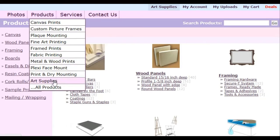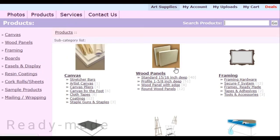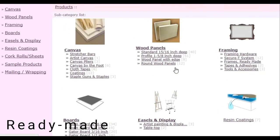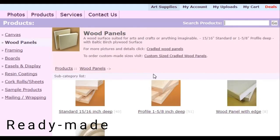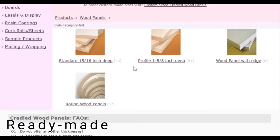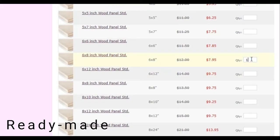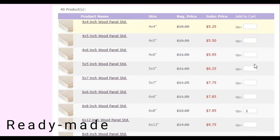Now let's look at how to order. For ready-made, under art supplies, click wood panels. Select your choices, add quantity, add to cart. Finally, you can check out.